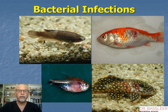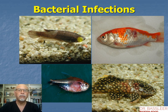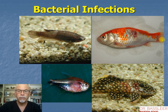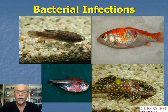Bacterial infections can be seen here on this ornamental tropical fish. You see the betta here with the white mouth — white mouth disease — and the white saddlebag here. Both are necrotic tissues caused by the bacteria columnaris. Here is a Sarasa goldfish with a red ulcer and some red base of the fins, and also the tail caused by Aeromonas, also called furunculosis.